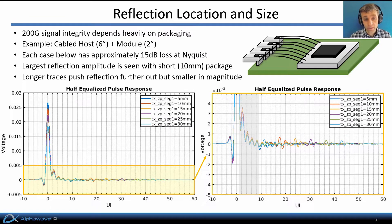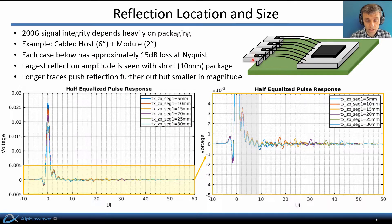At 200 gigabits per second, signal integrity depends heavily on packaging. Here's an example of a cabled interface between host and module, 6 inches long. The module has about a 2-inch trace on it, and in each of the cases there's approximately 15 dB loss at Nyquist. The only difference is the package design of the host.